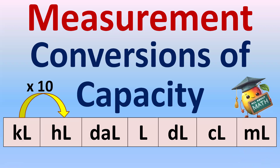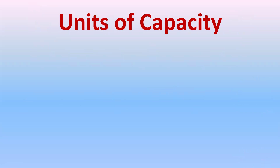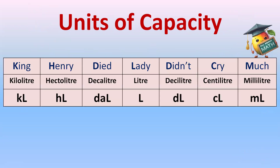Conversions of capacity — before conversions, let's understand the units of capacity. To learn the sequence of the units, we have the mnemonic: King Henry Died Lady Didn't Cry Much — kilolitre, hectolitre, dekalitre, liter, decilitre, centilitre, and millilitre. These are the abbreviations for the units, and you can learn the sequence with the help of this mnemonic.